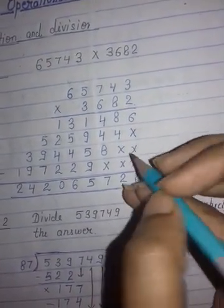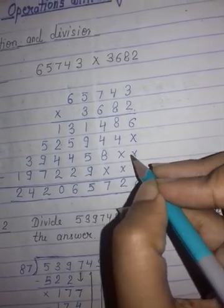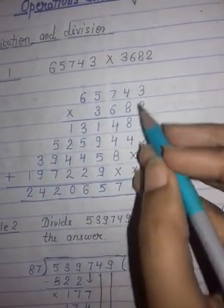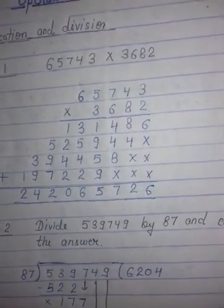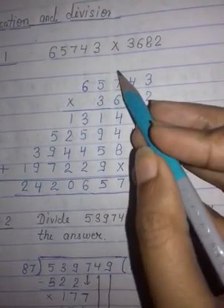Now come to the next row here. We will leave two places, ones and tens. We will start with the hundreds place. 6 times 3 is 18, carry 1. 6 times 4 is 24, 24 plus 1 is 25. Write down 5 here, carry 2.